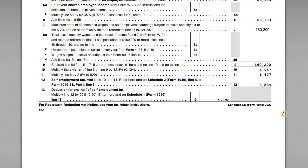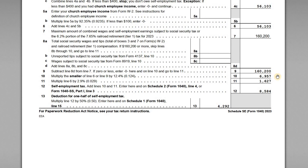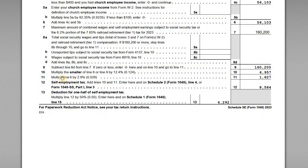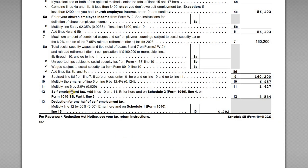Now we figure out how much tax is owed. Line 10 is the smaller of line 6 or line 9 — $56,103 versus $160,200 — so we use $56,103. Multiplying by 12.4% gives us $6,957 for the Social Security tax. Then we multiply line 6 by 2.9%: $56,103 times 2.9% gives us $1,627 for Medicare. Adding the two together, our total SE tax is $8,584.